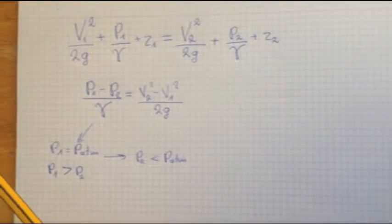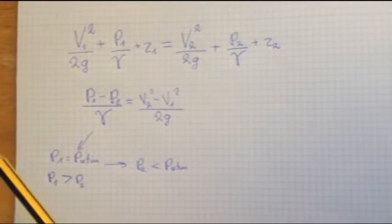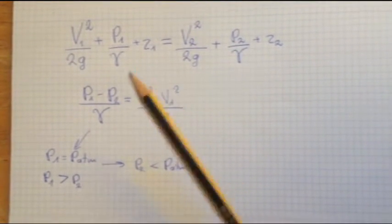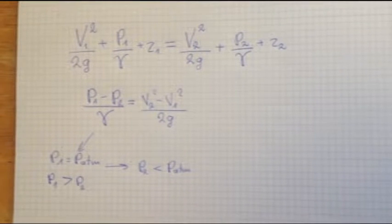We have gamma, this is a specific weight, equal to density times gravitational acceleration.